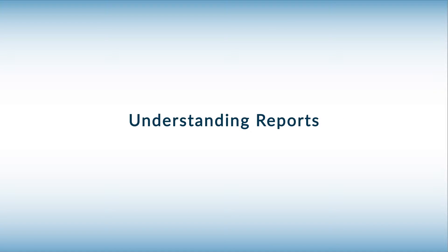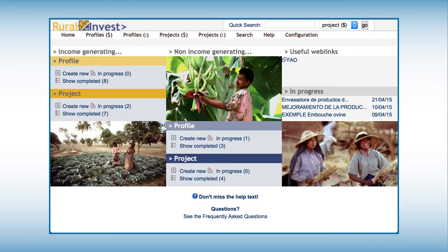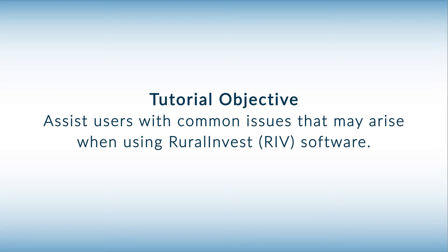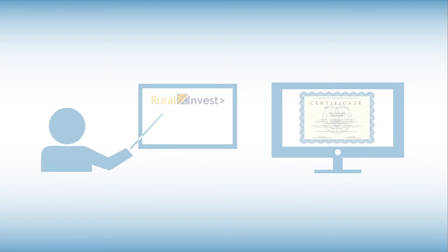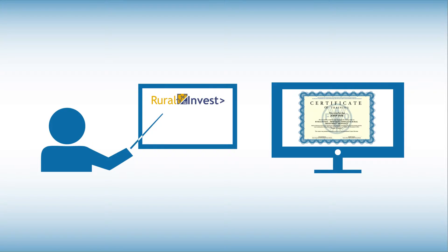Welcome to one in a series of web-based tutorials for people working with the investment package developed by FAO. These tutorials will assist users of RuralInvest with problems that can arise in using the software. They are geared to people who have already attended a formal RIV course or who have taken the e-learning course, as they do not provide an overall guide to the use of the RuralInvest package.